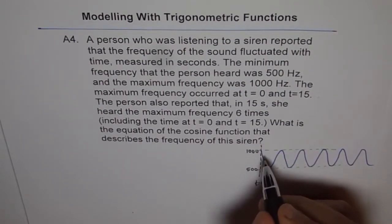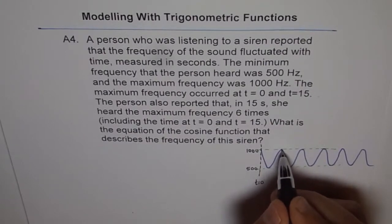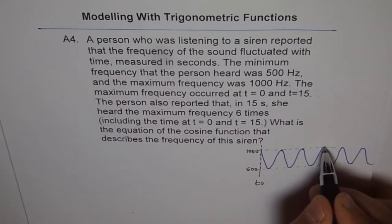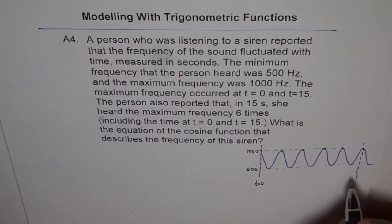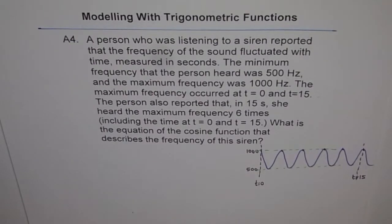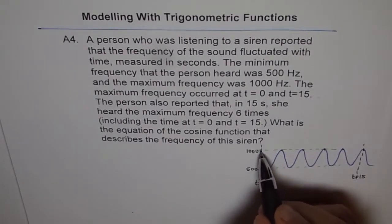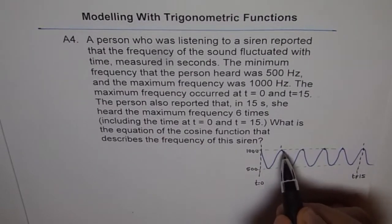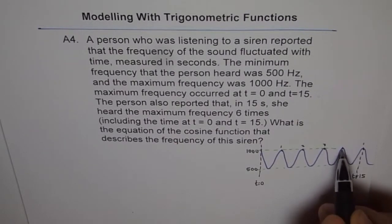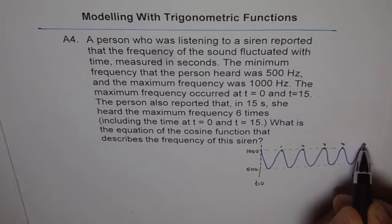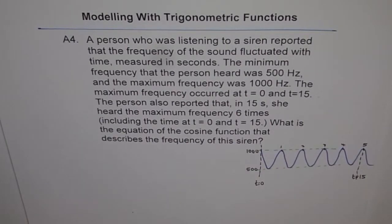So I get maximum 6 times as 1, 2, 3, 4, 5, 6. So up to here, this is t equals 15. Can you tell me how many cycles are there in these 15 seconds? First cycle, starting from here, ends here. So you have cycle number 1 and then number 2 and then number 3 and then number 4. And this is the completion of 5th cycle. Do you see that?